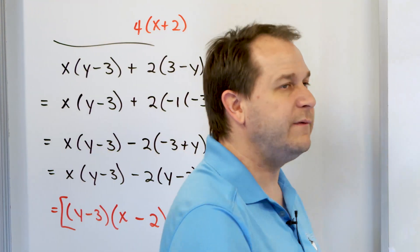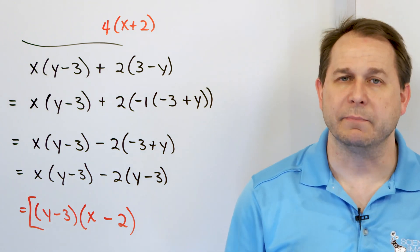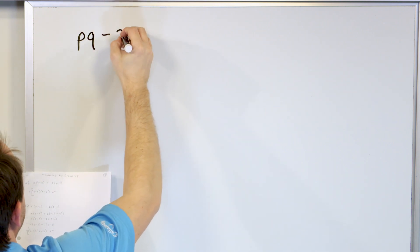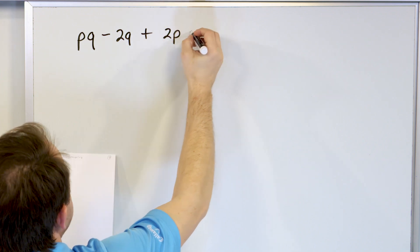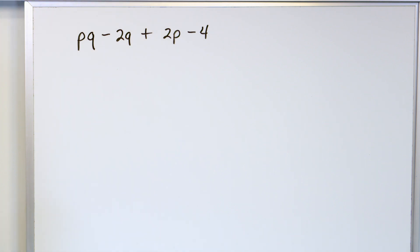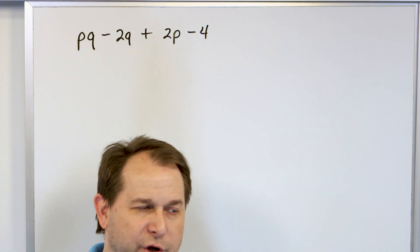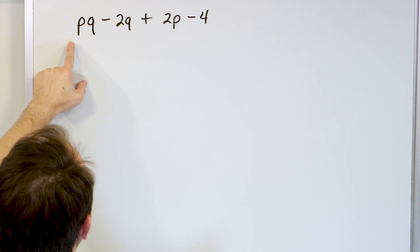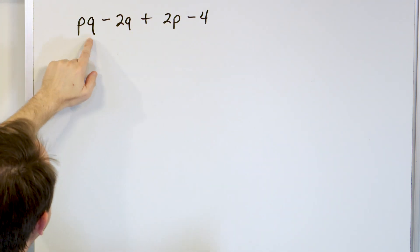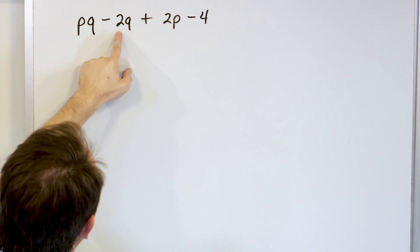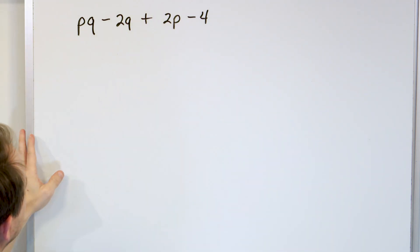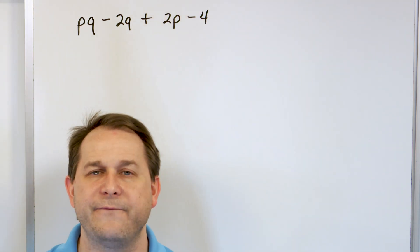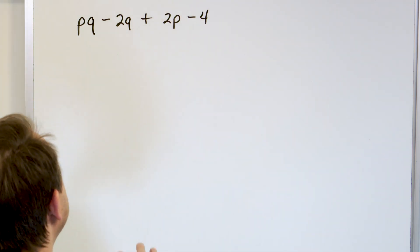Now let's look at another example. We have p times q minus 2, plus 2 times p minus 4. Factor that. The first thing you do is look for things common to all terms. There's a p in the first term and a p in the third term, but no p in the second or fourth. There's a q only in the first two terms. There are 2s in the second and third terms but not all four. So nothing is common to all terms, and you feel stuck. But sometimes math is about zooming into smaller parts of the problem and trying to factor smaller pieces just to simplify a little bit.